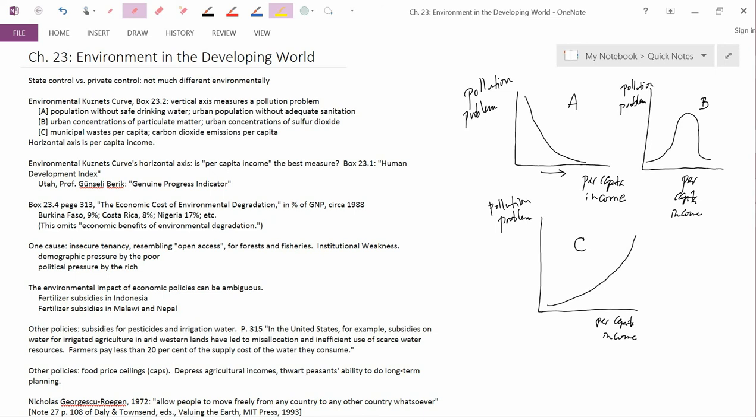The topic of this chapter is how to help people in the developing world. And Georgescu said in 1972 that he suggested at a conference to allow people to move freely from any country to any other country whatsoever.